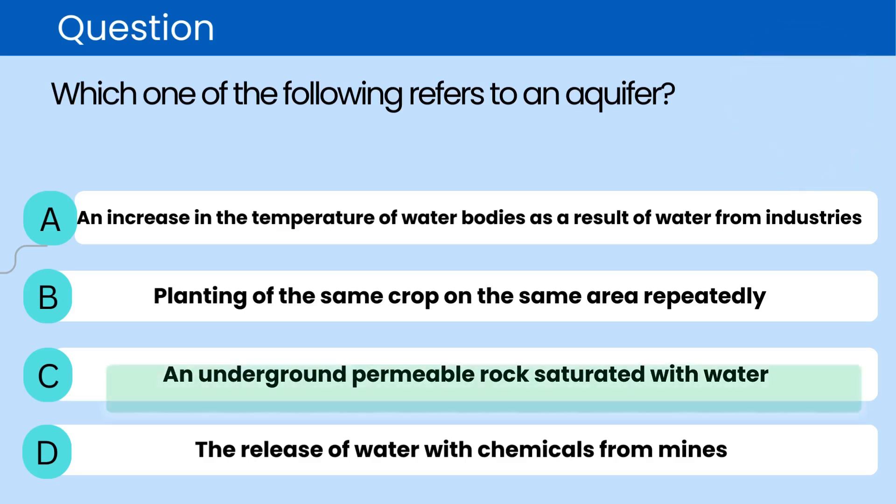The correct answer is C. An underground permeable rock saturated with water. An aquifer is a geological formation that stores and transmits groundwater, usually composed of permeable rocks or sediments.